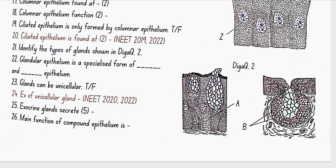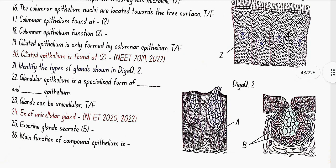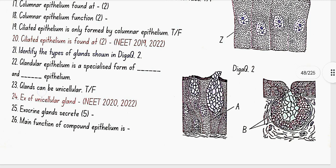Ciliated epithelium is found at inner surface of hollow organs like bronchioles and fallopian tubes. Identify the types of glands shown in diagram 2. Here in diagram 2, A is unicellular gland and B is multicellular gland.